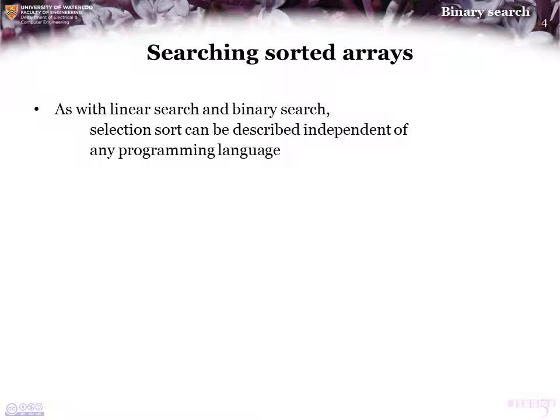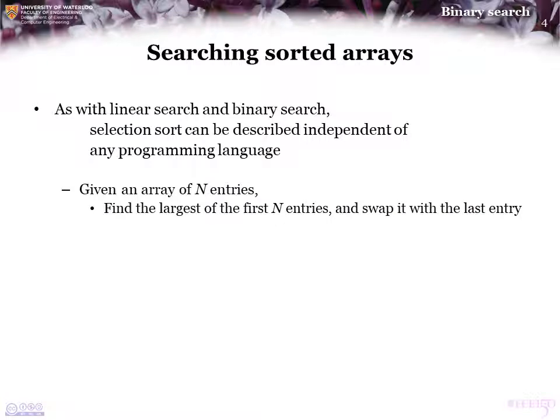As with linear and binary search, the selection sort algorithm can actually be described independent of any programming language, and that's actually preferable, because you want to be able to understand what the algorithm does. So, very simply, given an array of n entries, or an array with capacity n, the first thing you do is find the largest of the entries and swap it with the last entry of the array.